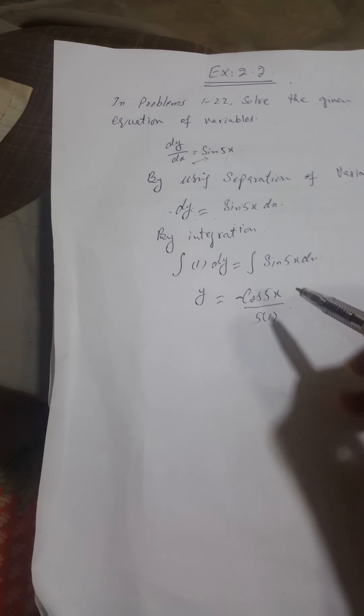Now I am going to solve question number 2. As you notice, question number 2 is dy/dx is equal to (x + 1) whole square. Again I will, by using cross multiplication, separate the variables by separation of variables, giving dy = (x + 1)² dx.